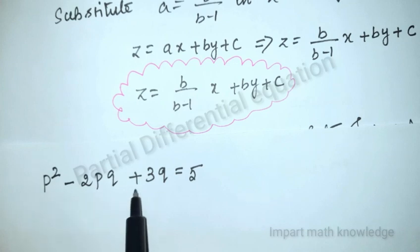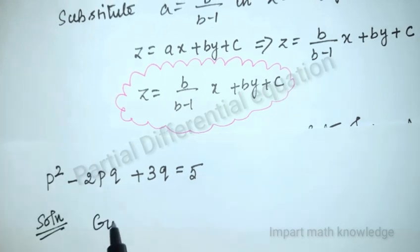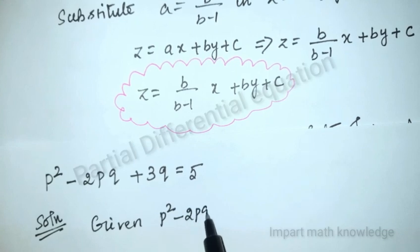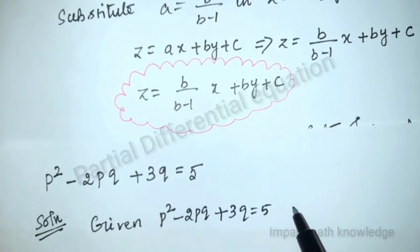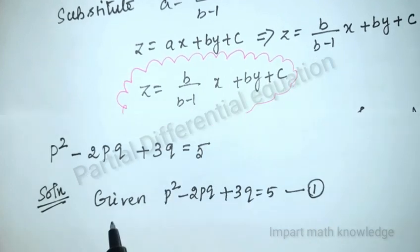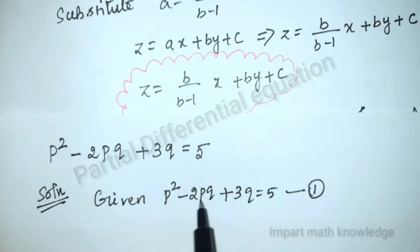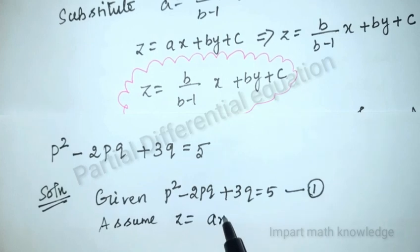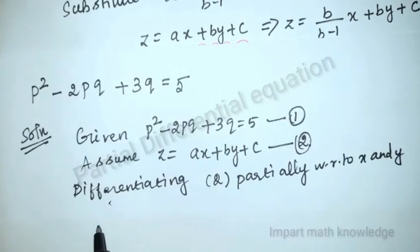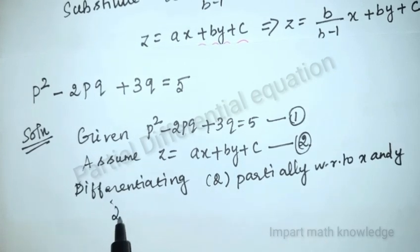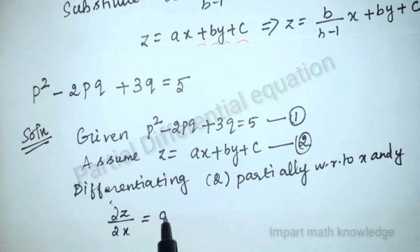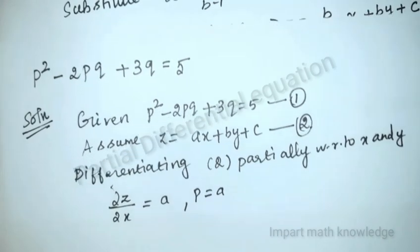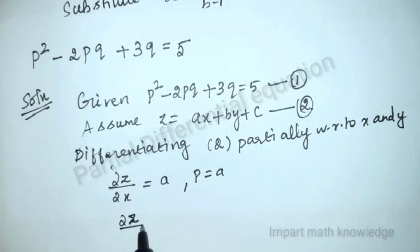Next problem: p² - 2pq + 3q = 5. This equation contains p and q terms only. Assume z = ax + by + c. Differentiating partially with respect to x gives p = a, and differentiating with respect to y gives q = b.